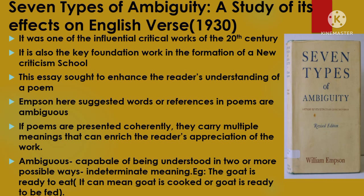This essay sought to enhance the reader's understanding of a poem by isolating the linguistic properties of the text. Empson suggested that words or references in poems are often ambiguous, and if poems are presented coherently, they carry multiple meanings that can enrich the reader's appreciation. Ambiguous means doubtful or uncertain — capable of being understood in two or more possible ways. A word or sentence that is not clear in intention or meaning makes various interpretations possible. For example, 'The goat is ready to eat' can mean the goat is cooked and ready for everyone to eat, or that the goat is ready to be fed some food. When a word has more than one indeterminate meaning, that word — and its sentence — is called ambiguous.